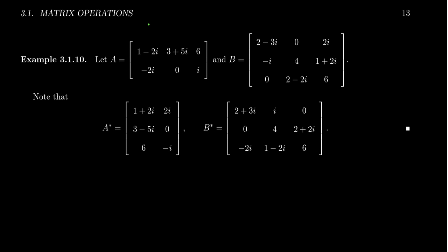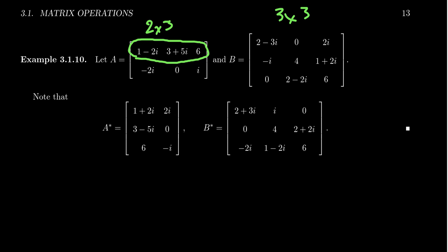So let's take two complex matrices. One is 2 by 3 — that's A — and then B right here is 3 by 3. For the conjugate transpose A star, we're going to take the first row of A and flip it — that becomes the first column of A star. But notice we take conjugates here: 1 minus 2i becomes 1 plus 2i, and 3 plus 5i becomes 3 minus 5i. You switch the sign of the imaginary part.